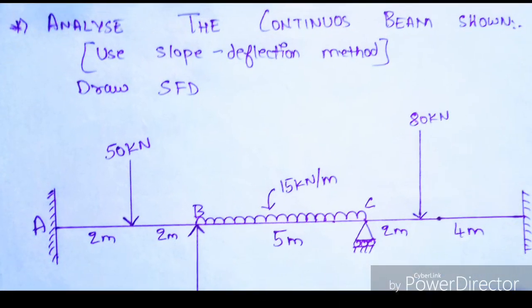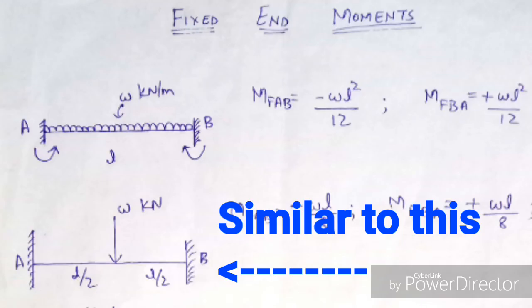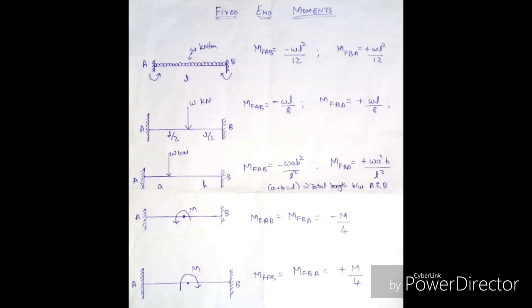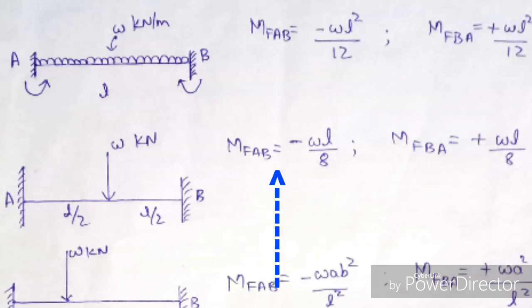To find the fixed end moments, first consider part AB of the beam. Both ends are fixed and there is a point load acting at the center. There is a fixed end moment chart — the link is available in the description. Go to that website and download the chart. It shows fixed end moment values for all different cases: point load, UDL, and moment.